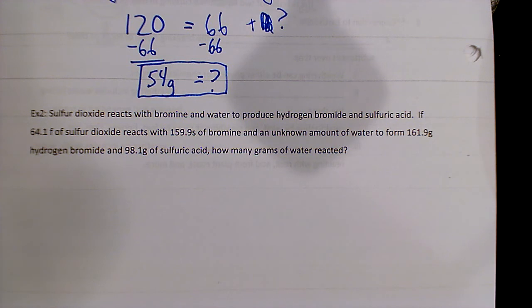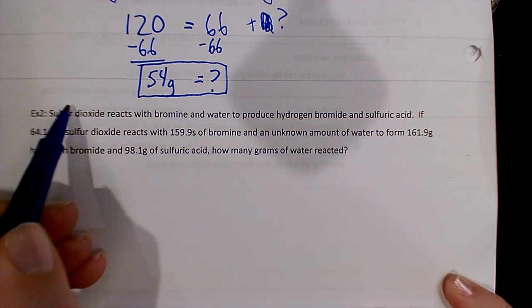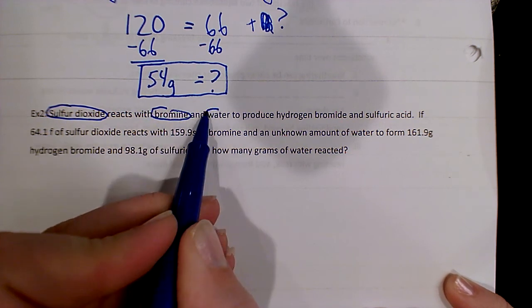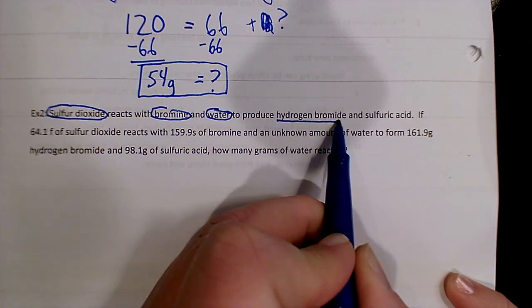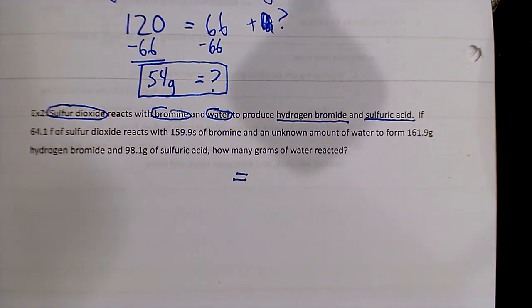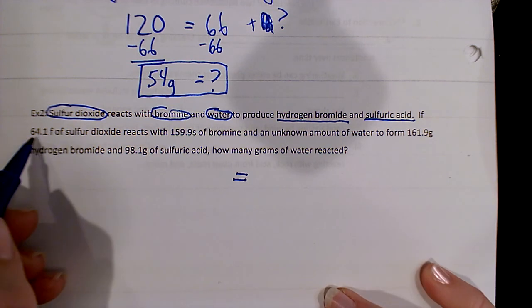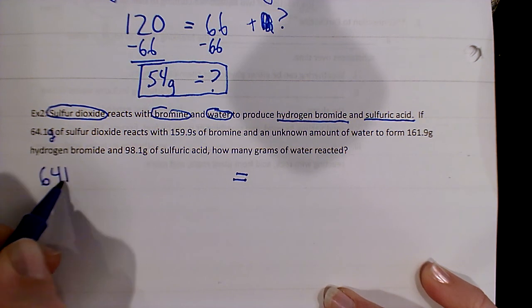So second example, kind of the same deal. I'm going to do the same thing where I circle the reactants and underline the products here. So it says sulfur dioxide reacts with bromine and water to produce hydrogen bromide and sulfuric acid. Again, you don't really have to know what these are to interpret this sentence. So it says this reacts with this and this to produce. So this is a reactant, and this is a reactant, and this is a reactant. It says all three of these are reacting with each other. And then it says to produce, so these are the things we make. So all the things I circled, I'm going to put their values on the left, and the things I produced, I'm going to put their stuff on the right.